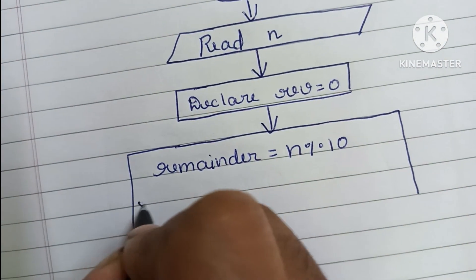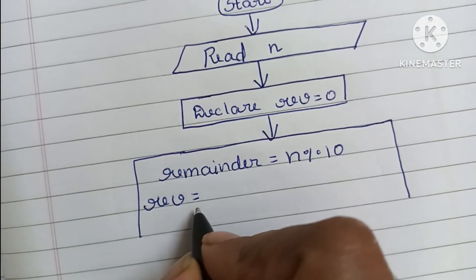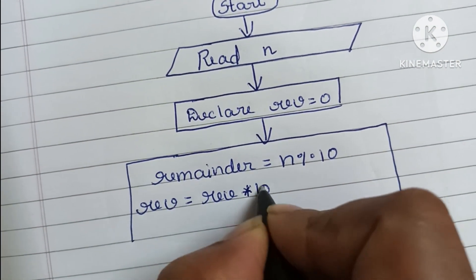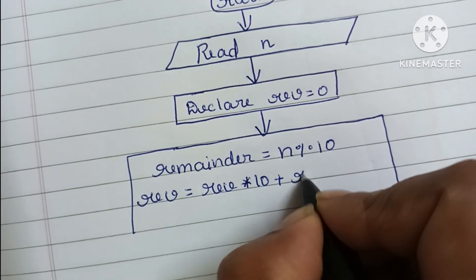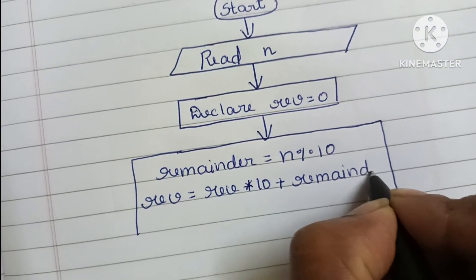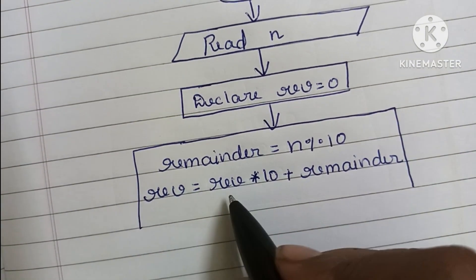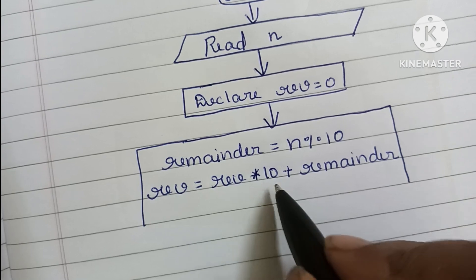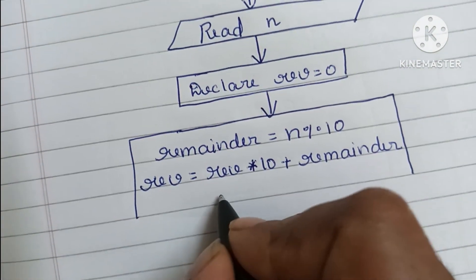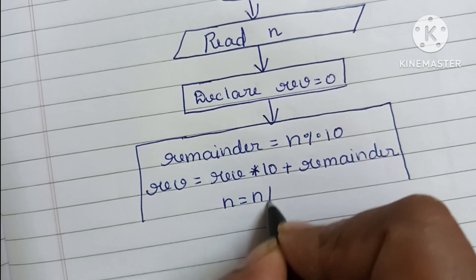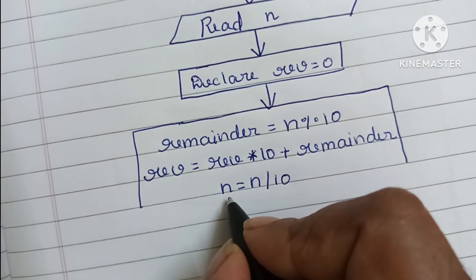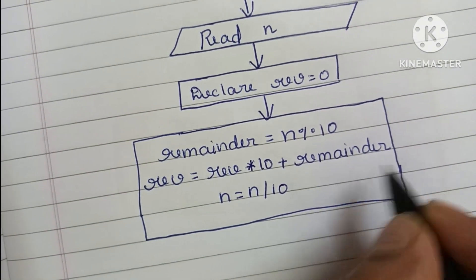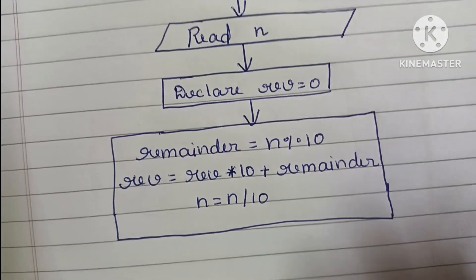Next we have to find the reverse using the formula: reverse = reverse × 10 + remainder. Then we update N using the formula: N = N divided by 10. These are the calculations to find the reverse value.